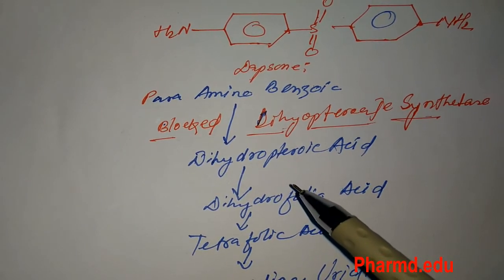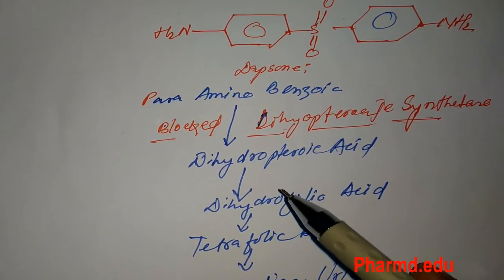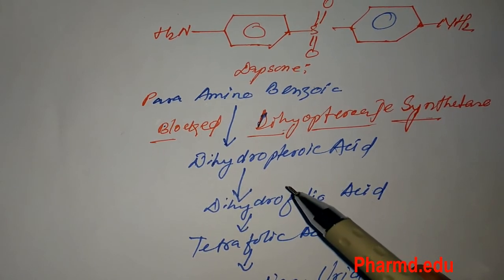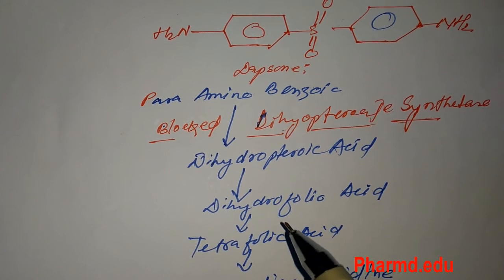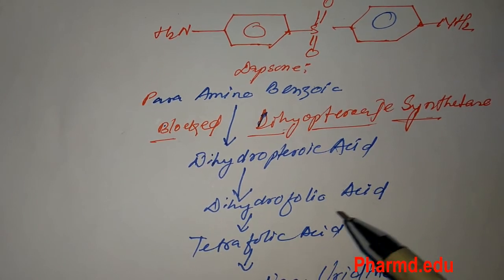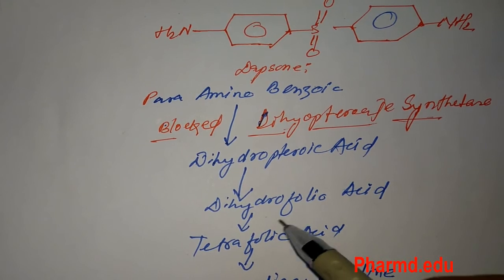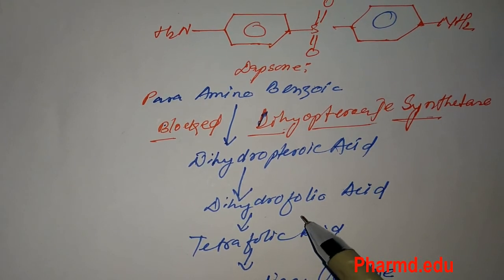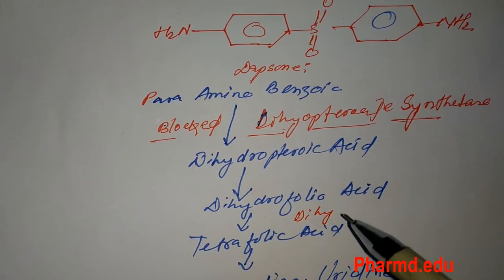Then DNA and RNA. As you know, folic acid — pteridine is the precursor for the synthesis of DNA and RNA. The drug is blocked here.